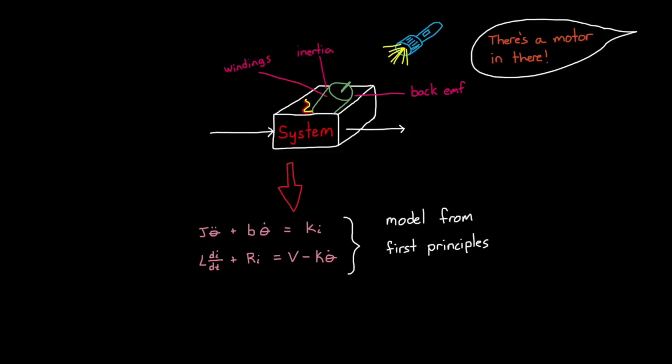Now this type of modeling is usually what you learn first, and with good reason. It helps you understand the intricacies of the system you're trying to control, and forces you to think about what the important components are, and therefore what needs to be modeled, and which components can just be left out.